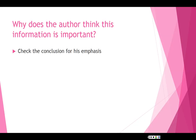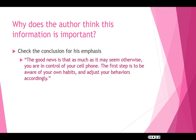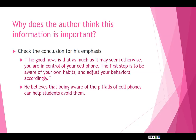This also includes a little bit of analysis, so I want to think about why the author thinks his information is important. I'm going to look at the conclusion, because the conclusion is where you tell people why what you're saying is important. In his conclusion he writes: 'The good news is that as much as it may seem otherwise, you are in control of your cell phone. The first step is to be aware of your own habits and adjust your behaviors accordingly.' So clearly he believes that if you're aware of these things that can be caused by cell phones, then you can try to avoid them.